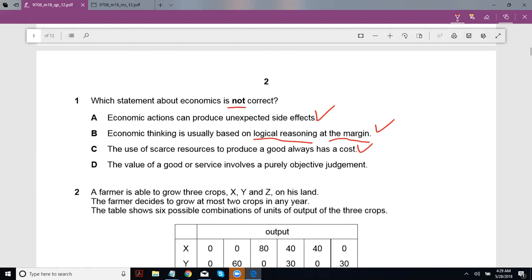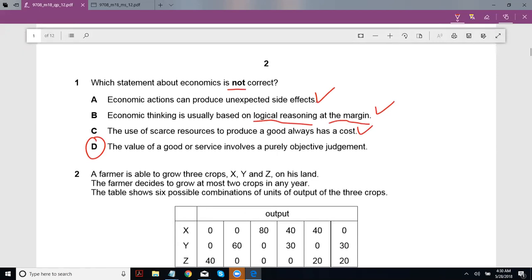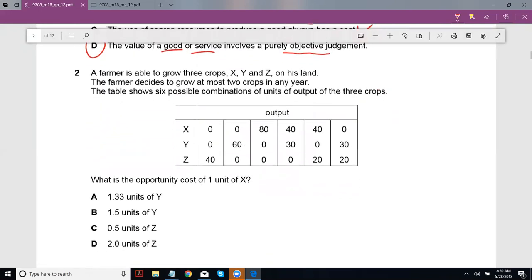C, the use of scarce resources to produce a good always has a cost. Well that's also correct because you always have an opportunity cost. D, the value of a good or service involves a purely objective judgment. Well not really. And in fact I'm surprised to see these options in AS to be honest, because you learn a lot about this in A2, but the idea here is the value. Now the value isn't just in the monetary terms of price, value basically includes the satisfaction or the utility you derive from that good or service. And the satisfaction that perhaps I derive from eating, I don't know, from eating Kit Kat could be different from the satisfaction someone else derives from eating Kit Kat. Our utilities could be different and hence our utilities are subjective. They're not objective. They vary person to person. So that's the idea and that's why that's wrong. So it's your answer.